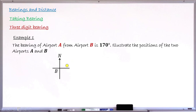We now measure the angle 170 degrees at airport B. We always start measuring from the line due north and turn in a clockwise direction. We don't need a protractor — we are just estimating to indicate the direction. The angle 170 is bigger than 90 but less than 180. From the midpoint — the position of airport B — we draw a straight line. This blue line gives the direction of airport A from airport B. The pilot will take this direction when leaving airport B and heading to airport A.